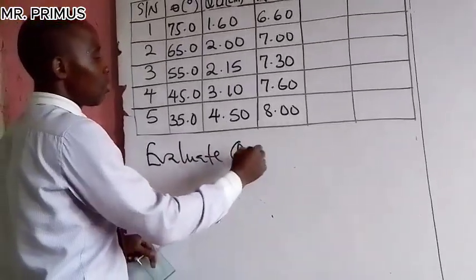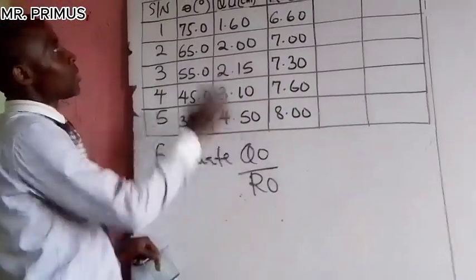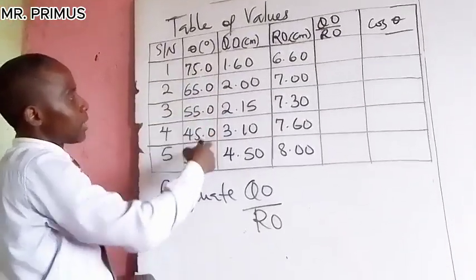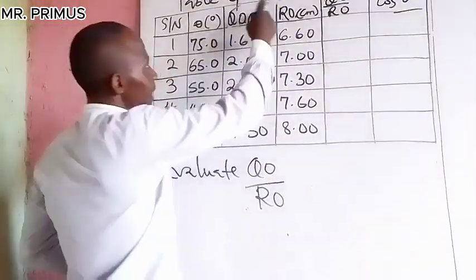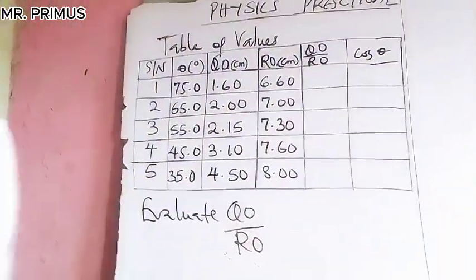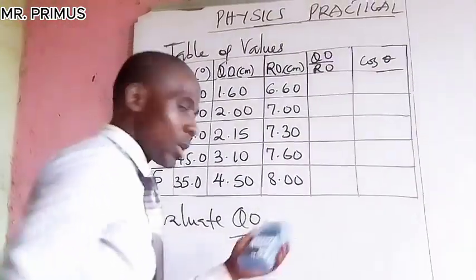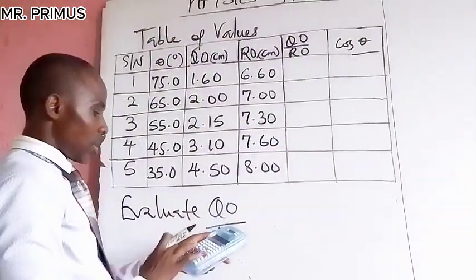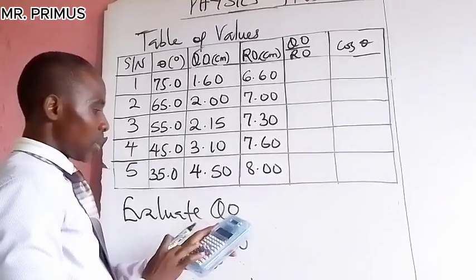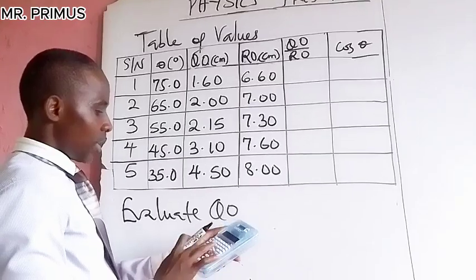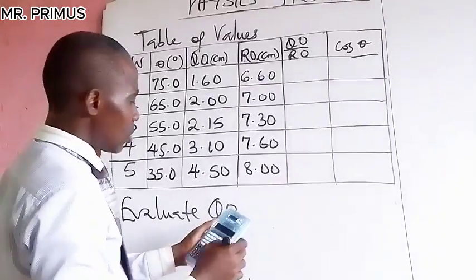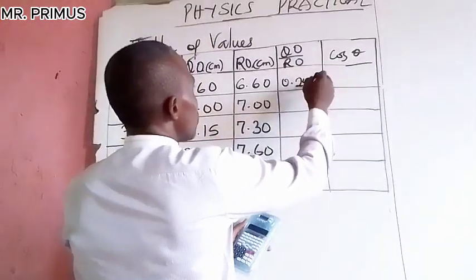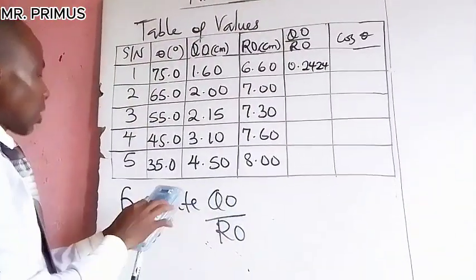We are going to evaluate QO over RO. Remember to complete your units. We can make these to two decimal places. We are going to divide this by this in each case using our calculator. So QO over RO: that is 1.60 divided by 6.60, which equals 0.2424.